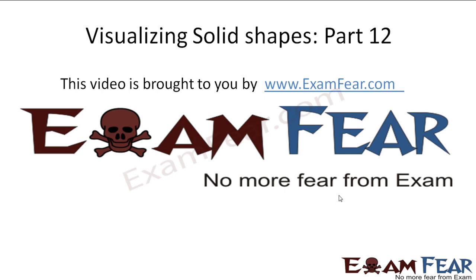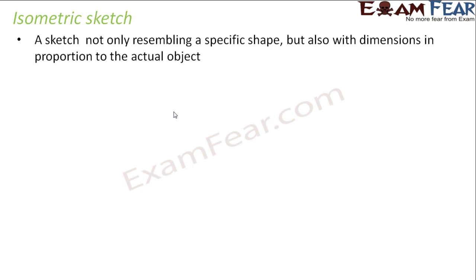Hello friends, this video on visualizing solid shapes part 12 is brought to you by examfear.com. When we talk about isometric sketching, it is more accurate in terms of dimensions than the oblique sketch. In isometric sketch, it not only resembles a specific shape but also has dimensions in proportion to the actual object.